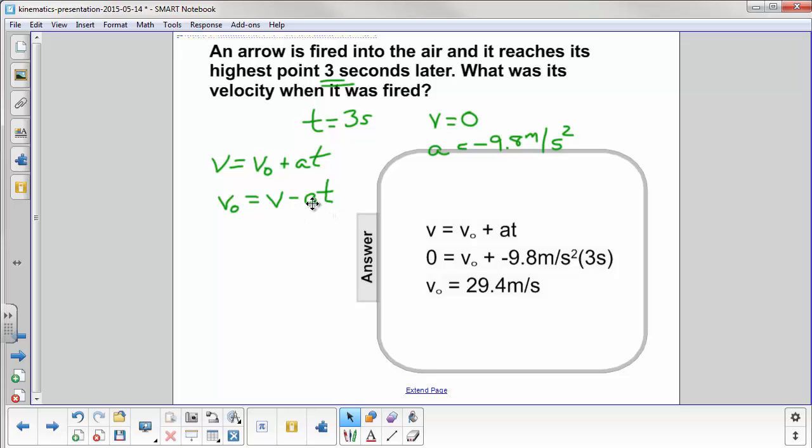And notice that the negatives cancel out. We have a negative for a and a negative here. So our initial velocity is 29.4 meters per second.